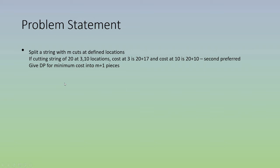You're given a string of length n and m cuts that are predefined locations, and we have to find the minimum cost of cutting it. The cost is essentially the length of the string being copied while cutting. For example, given a string of length 20 with cuts at positions 3 and 10, which cut should you make first — at 3 then 10, or at 10 then at 3?